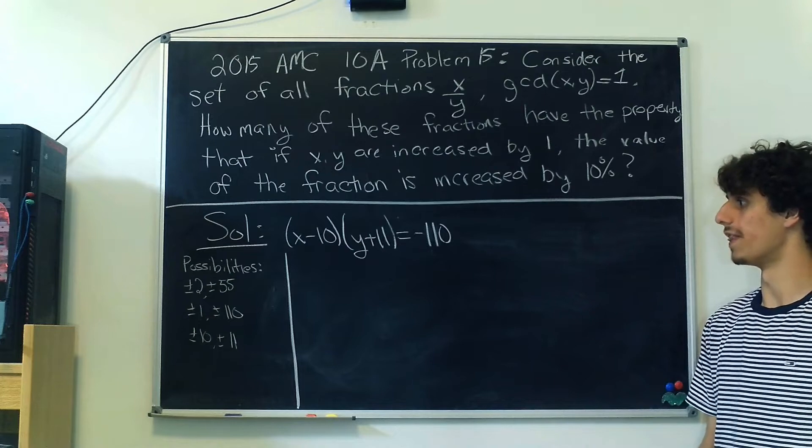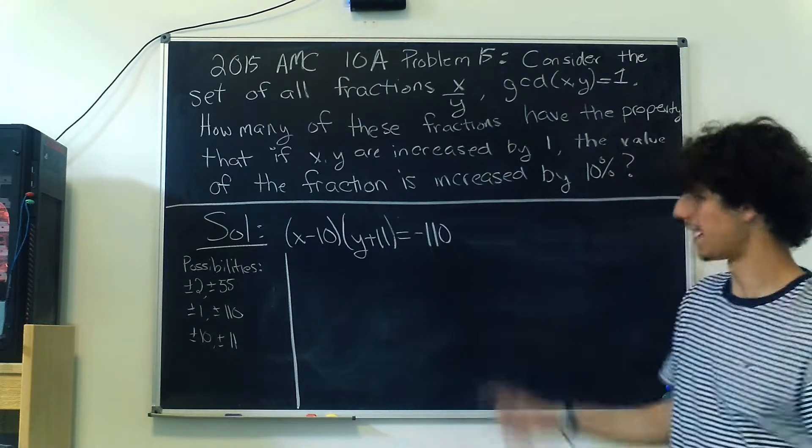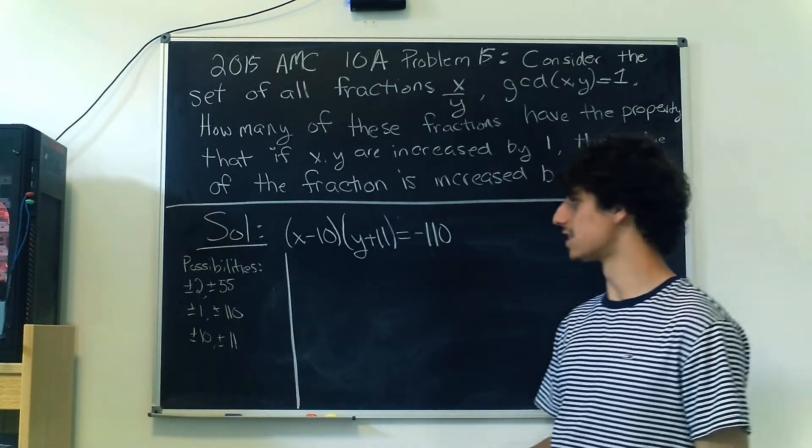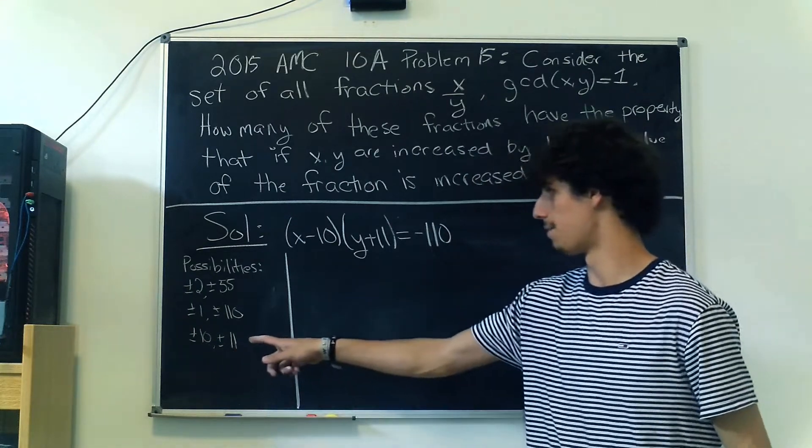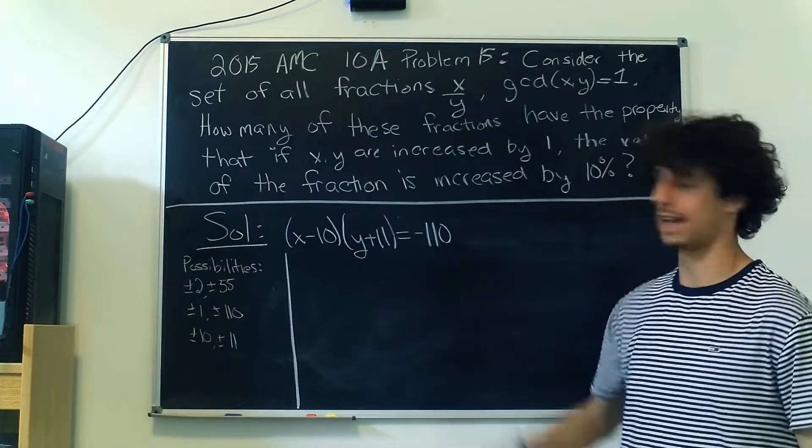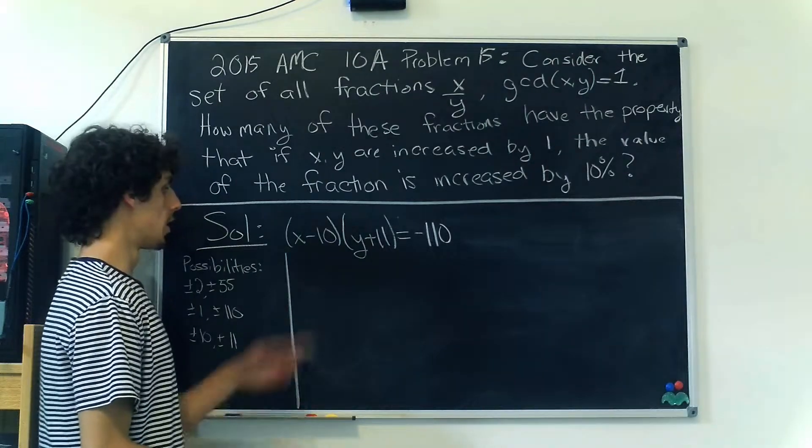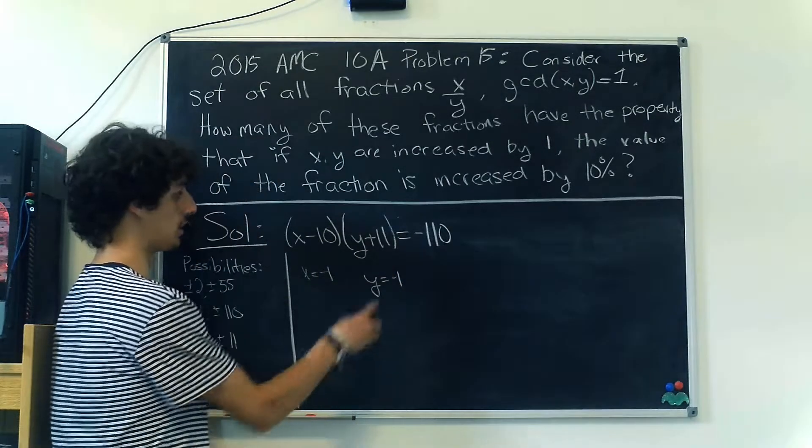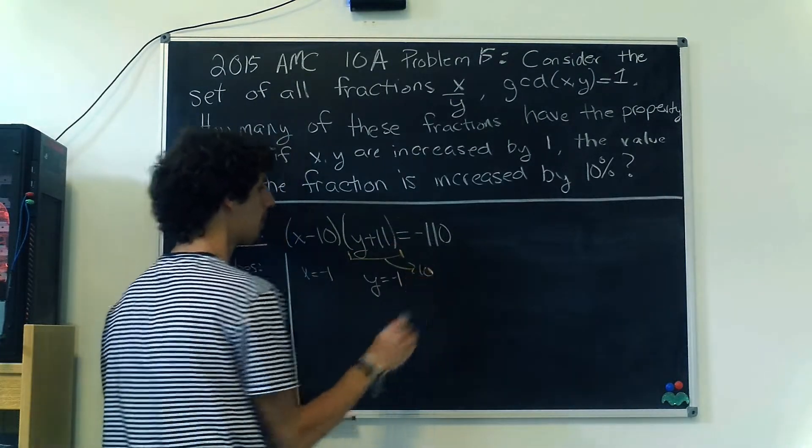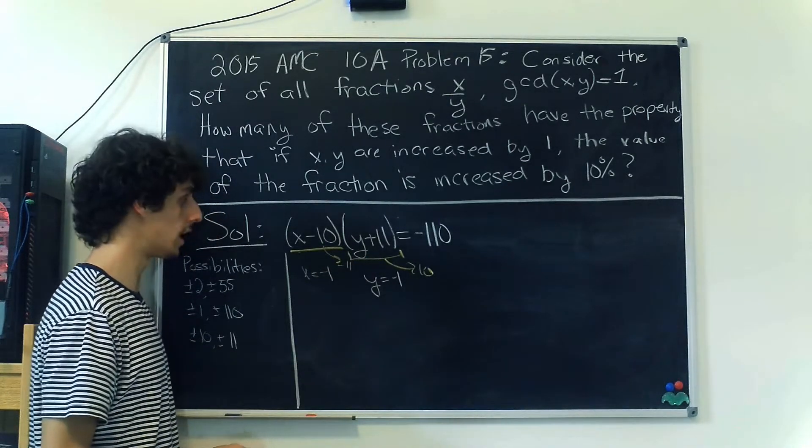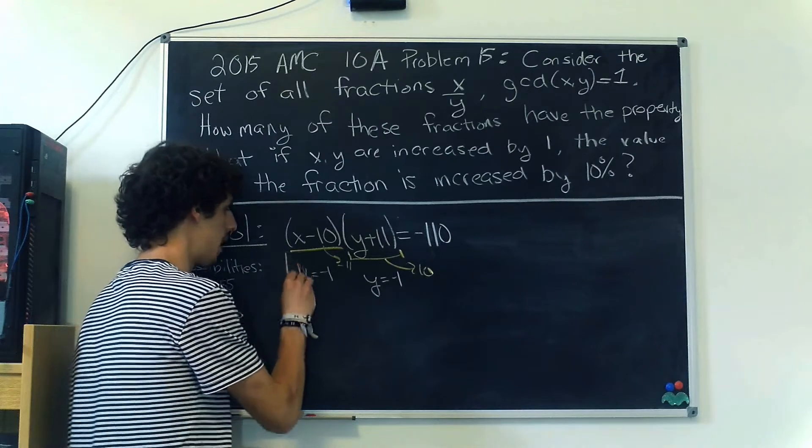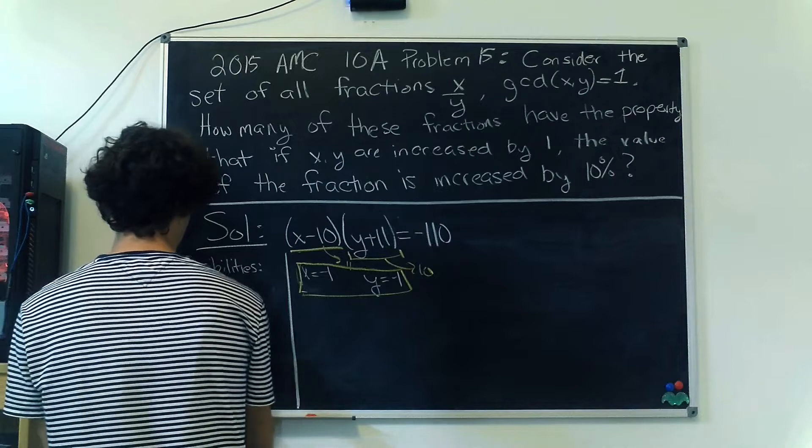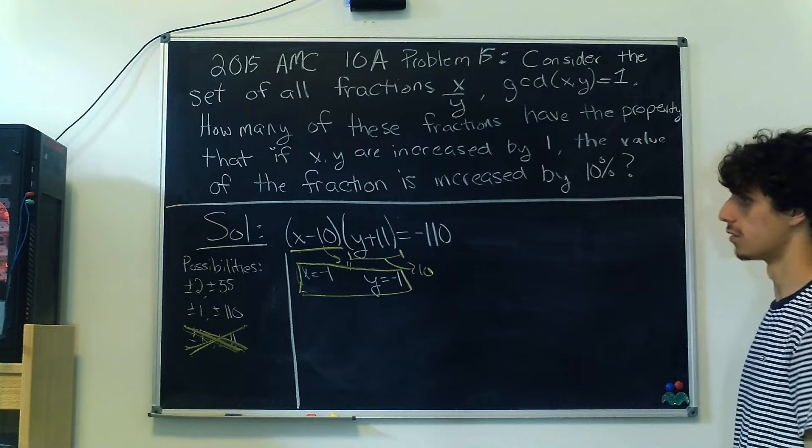Here I've written the possibilities for the factorizations of -110. Because we're working with -110, these two have to be opposites of each other. The easiest solution to knock out first is -10 and +11, because that means x is 0 and y is 0, which doesn't work with an indeterminate fraction. For -11 and +10, we can set x = -1 and y = -1. But if we increment this ordered pair (-1,-1), we get (0,0), which doesn't make sense. So there's no solutions for this factorization of -110.